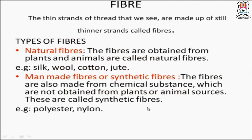You already learned in class 6 about fiber to fabric. Let's recall. Fiber: the thin strands of thread that we see are made up of still thinner strands called fibers. Fiber has two types: first is natural fibers and second is man-made fibers or synthetic fibers.